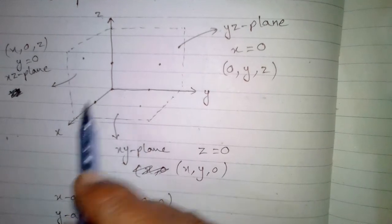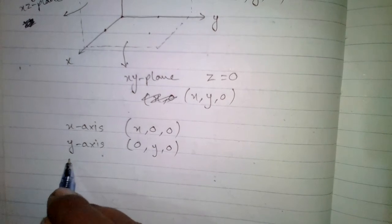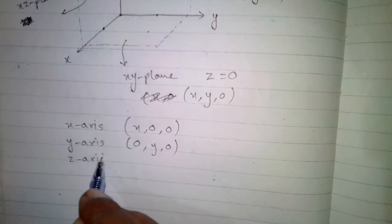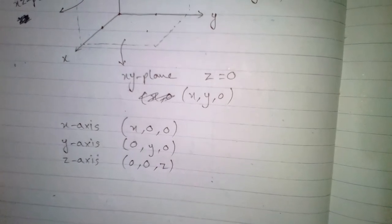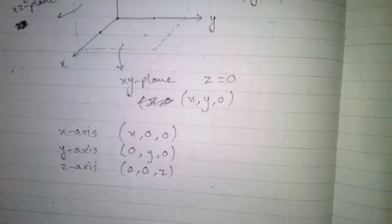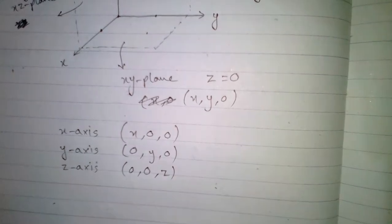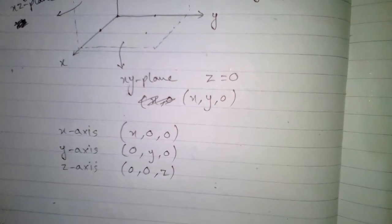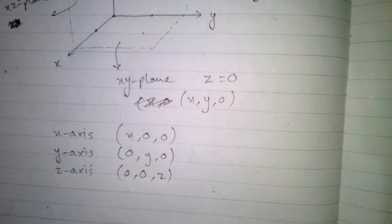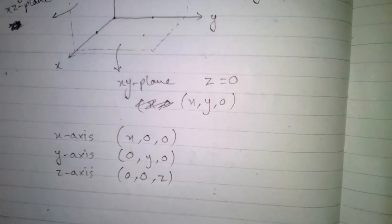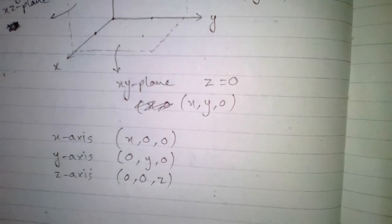Similarly, on the Z axis, the value of Z may be zero or nonzero, but the values of X and Y will always be zero. So the point on the Z axis is of the form (0, 0, z). These are the points in three dimensional space, and we have seen the form of points on the X, Y, and Z axes, and on the XY, YZ, and ZX planes.